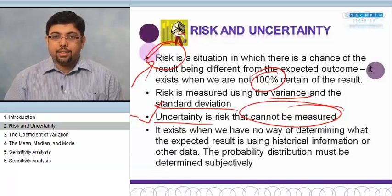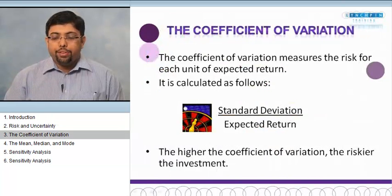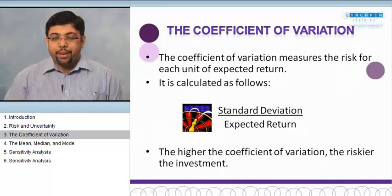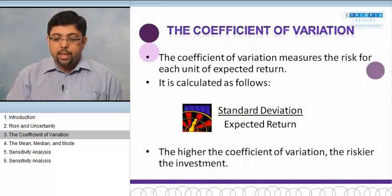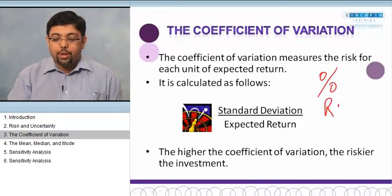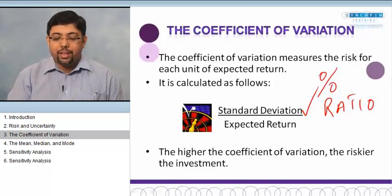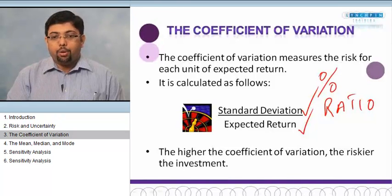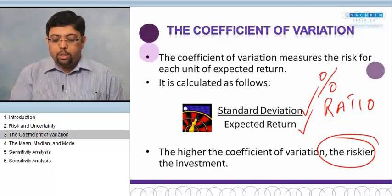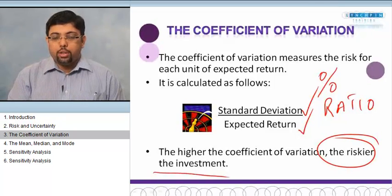Coefficient of variation is used for the risk of each expected return. The coefficient of variation is the percentage or the ratio between the standard deviation and the expected result or expected return. The higher the coefficient of variation, the riskier the investment. We want the investment to be very friendly and very certain.